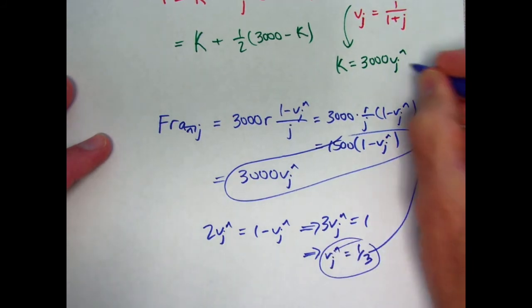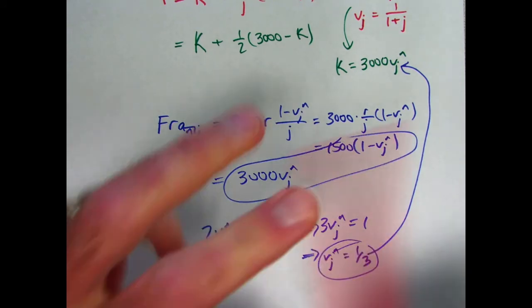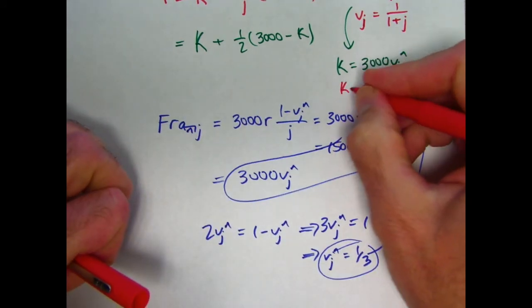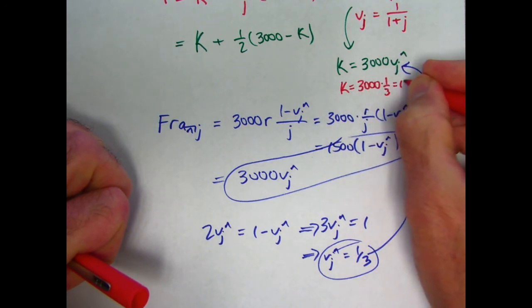We can now plug that in back up here. K is going to be 3,000 times 1 third is 1,000. Let me go ahead and write it up here. K is going to be 3,000 times 1 third is 1,000.